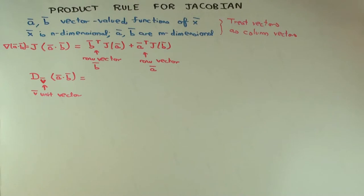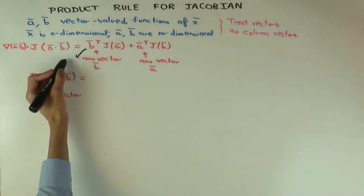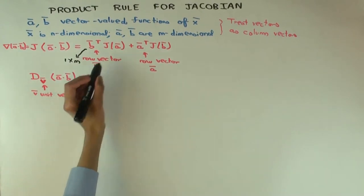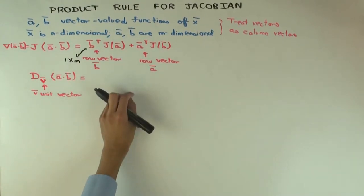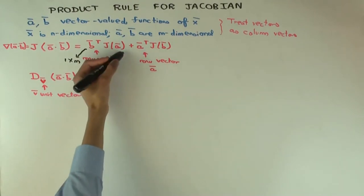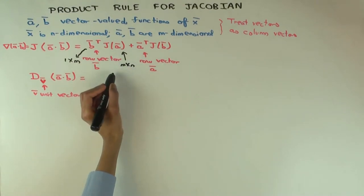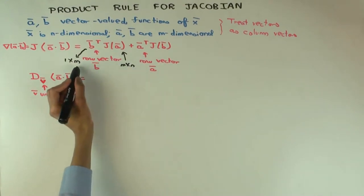Now does that work out dimensionally? So what are the dimensions of b as a row vector? What's b as a vector, it's m dimensional, right? So this is one row m columns, it's one cross m. So what's J_a, what's the dimensions of J_a as a matrix? m by n. So when you multiply, you get 1 by n.